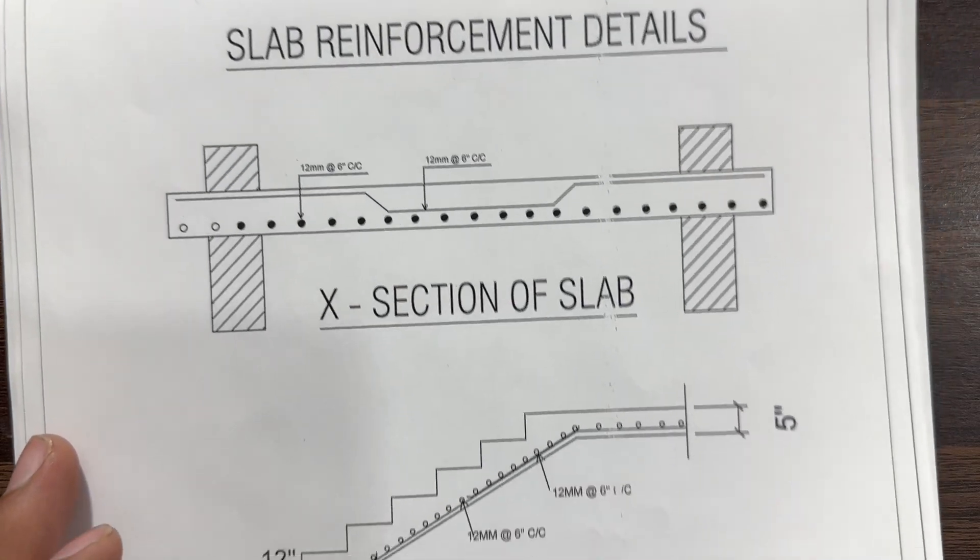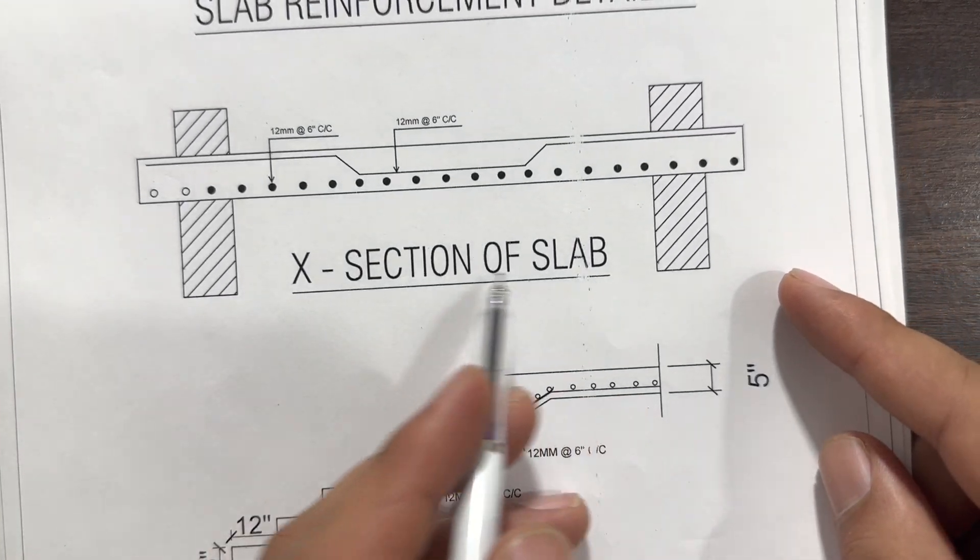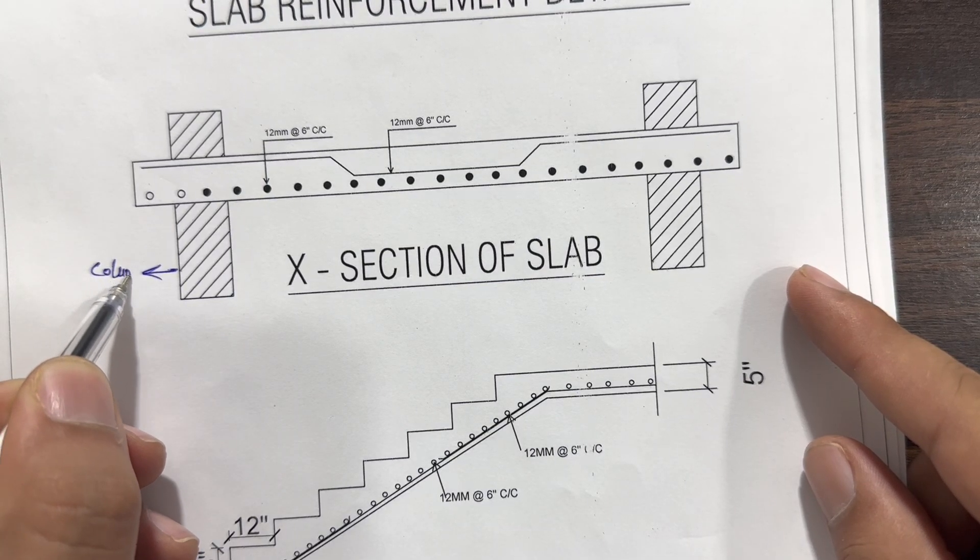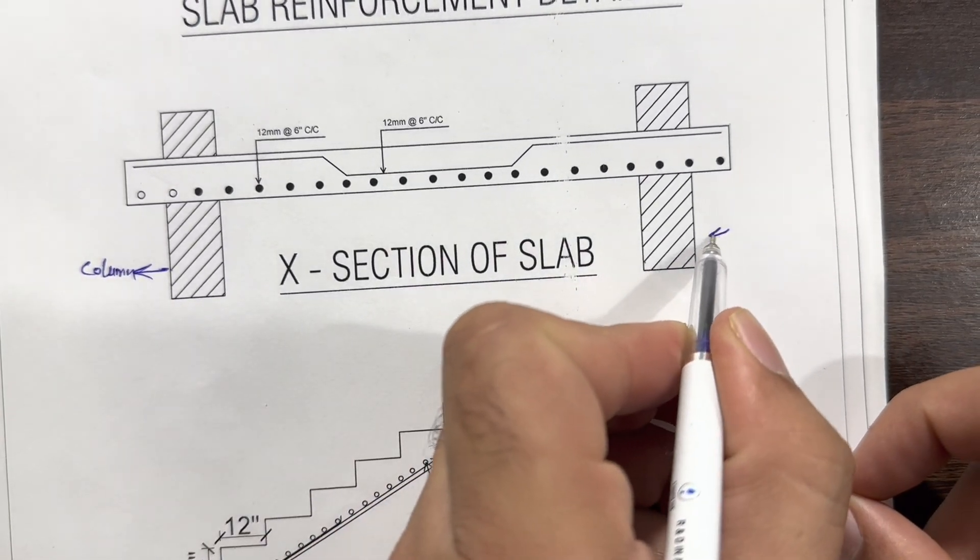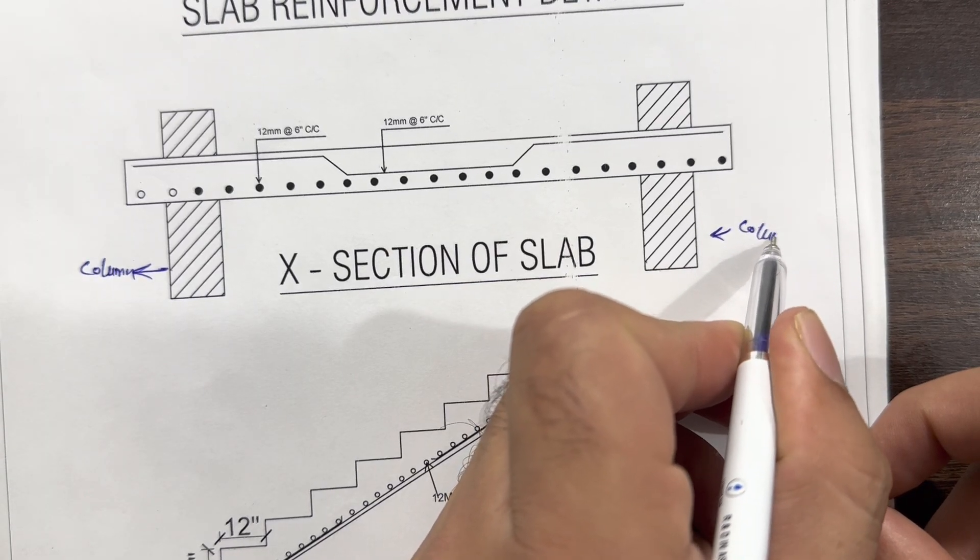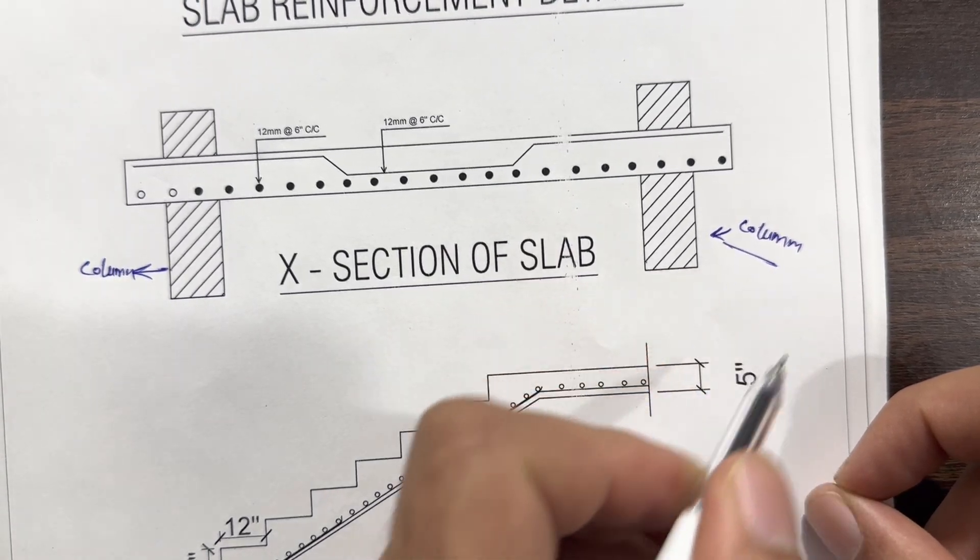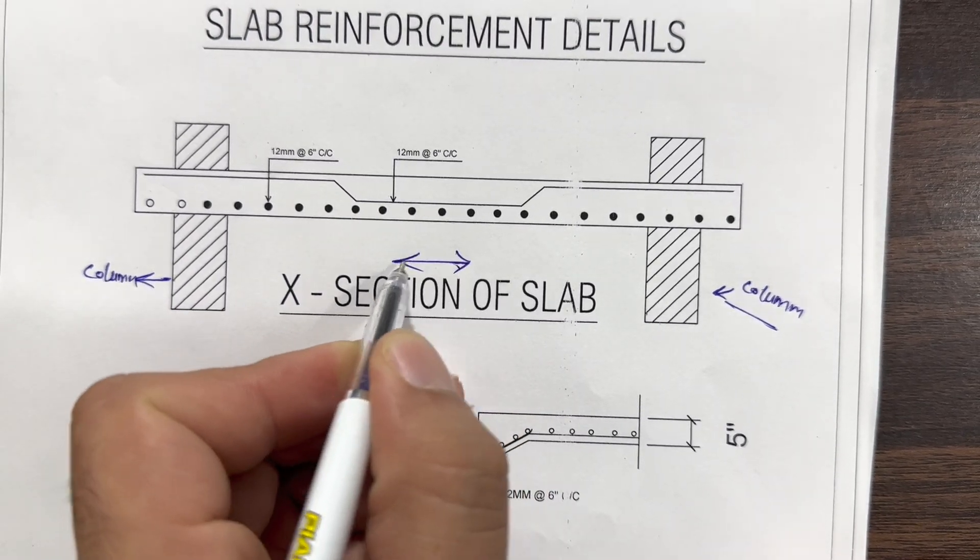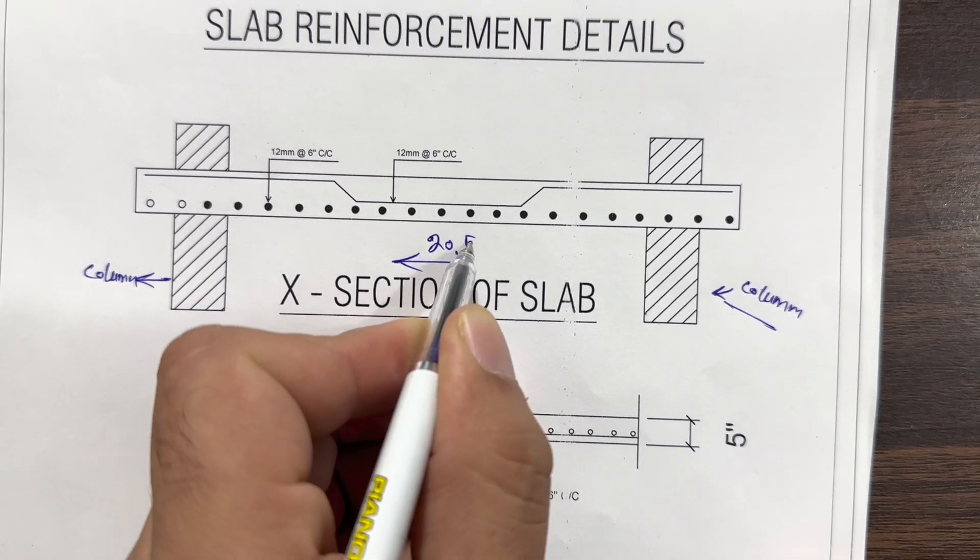You can see, first of all, this is X section of slab. As you can see, this is RCC column and this is other column. These are supports. So this is the span between two columns. Suppose the span between two columns is 20 feet.